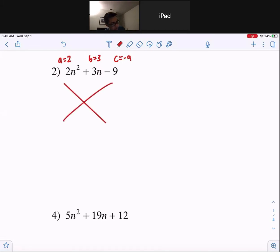And when you guys do your lovely X method, remember a times c up top, b on the bottom. So a times c is negative 18, and b is 3. So the two numbers that multiply to negative 18, but when added gives you guys 3, that is 6 and negative 3.